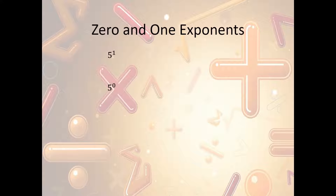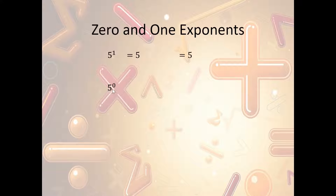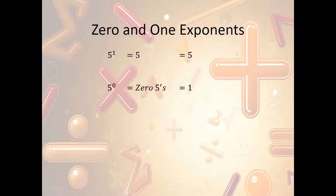Now what about 0 and 1 exponents? 5 to the first power is just 5 — we multiply 5 times itself once, so that's 5. Now 5 to the 0 power — there are zero 5s, and that equals 1. Please make sure you understand this: any number raised to the 0 power will always be 1, not 0. So 5 to the 0 power is 1, 2,000 to the 0 power is 1, and 200 million to the 0 power is 1.